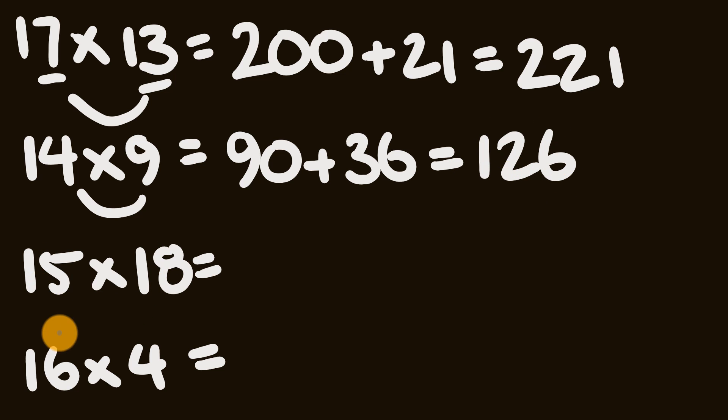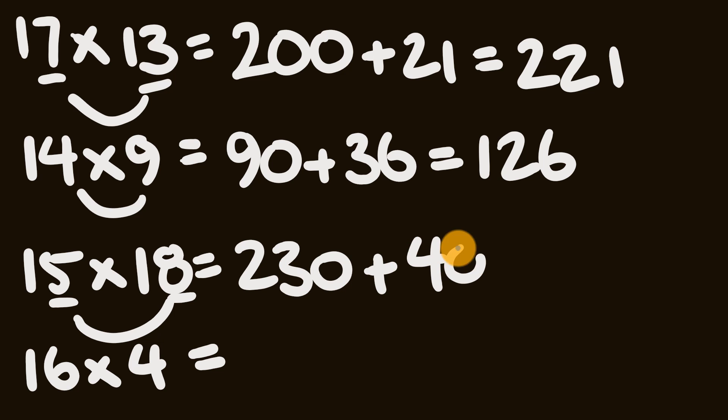The next question: 15 times 18. All right, so we're going to have a 5 and an 8. First off we have 15 plus 8, which is equal to 23, becomes 230. And to that we're going to add 5 times 8, which is 40. Did you get the answer of 270?